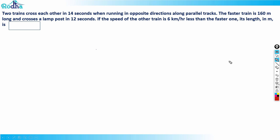Let's look at this next question from CAT 2021 Slot 1, from the Time-Speed-Distance chapter. The question says that two trains cross each other in 14 seconds when running in opposite directions — so in 14 seconds they completely cross each other.